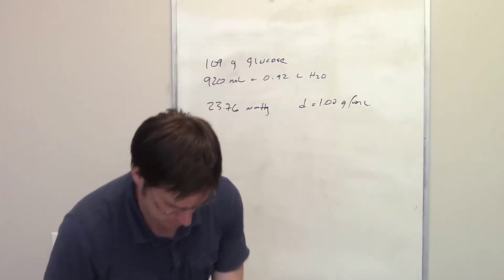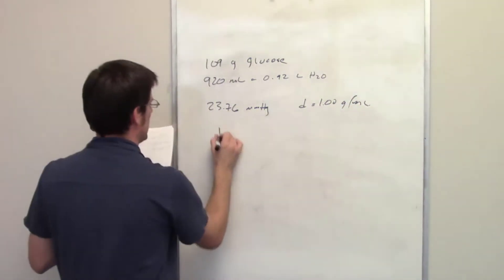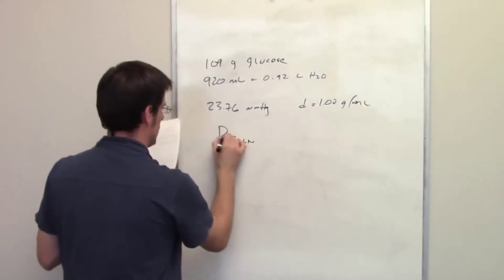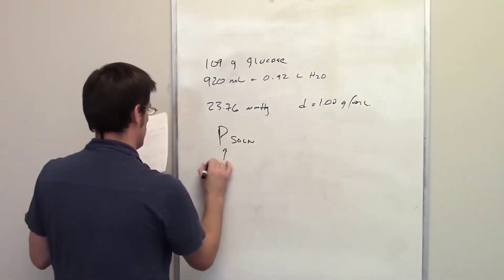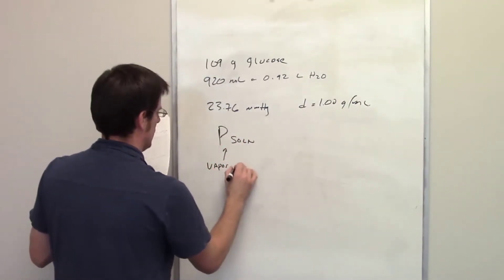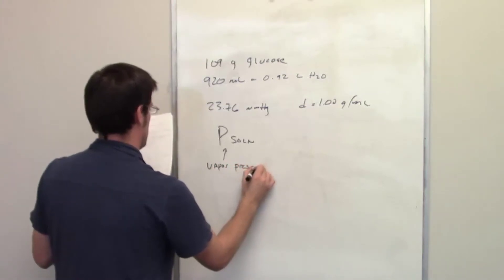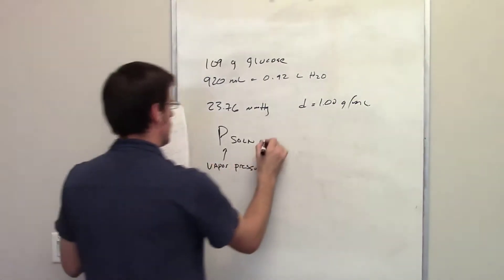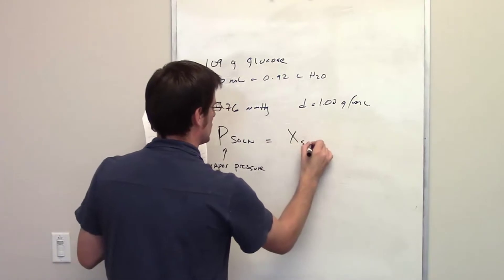So Raoult's Law is a magical equation that tells us that the vapor pressure of a solution is equal to the mole fraction of the solvent.